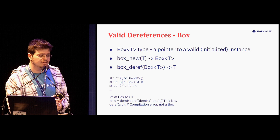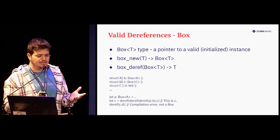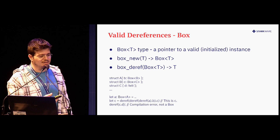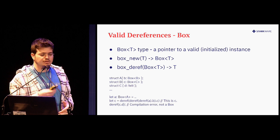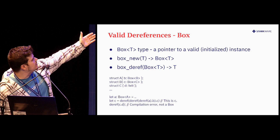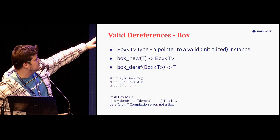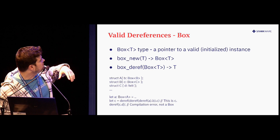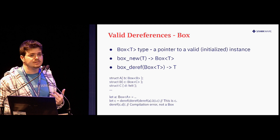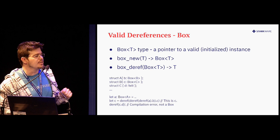It's important to note that box_deref cannot fail, because the only way to create a box is using valid addresses of type T via box_new. This is a way to enforce safety by construction — you only dereference things we know are initialized valid instances. In the previous example, the compiler from Sierra to Casm will allow dereferencing three times — at that point the type is felt. When you try to dereference again, you'll get a compilation error, not a runtime error, not a failed proof. The developer would not be able to deploy their code because it has a compilation error.